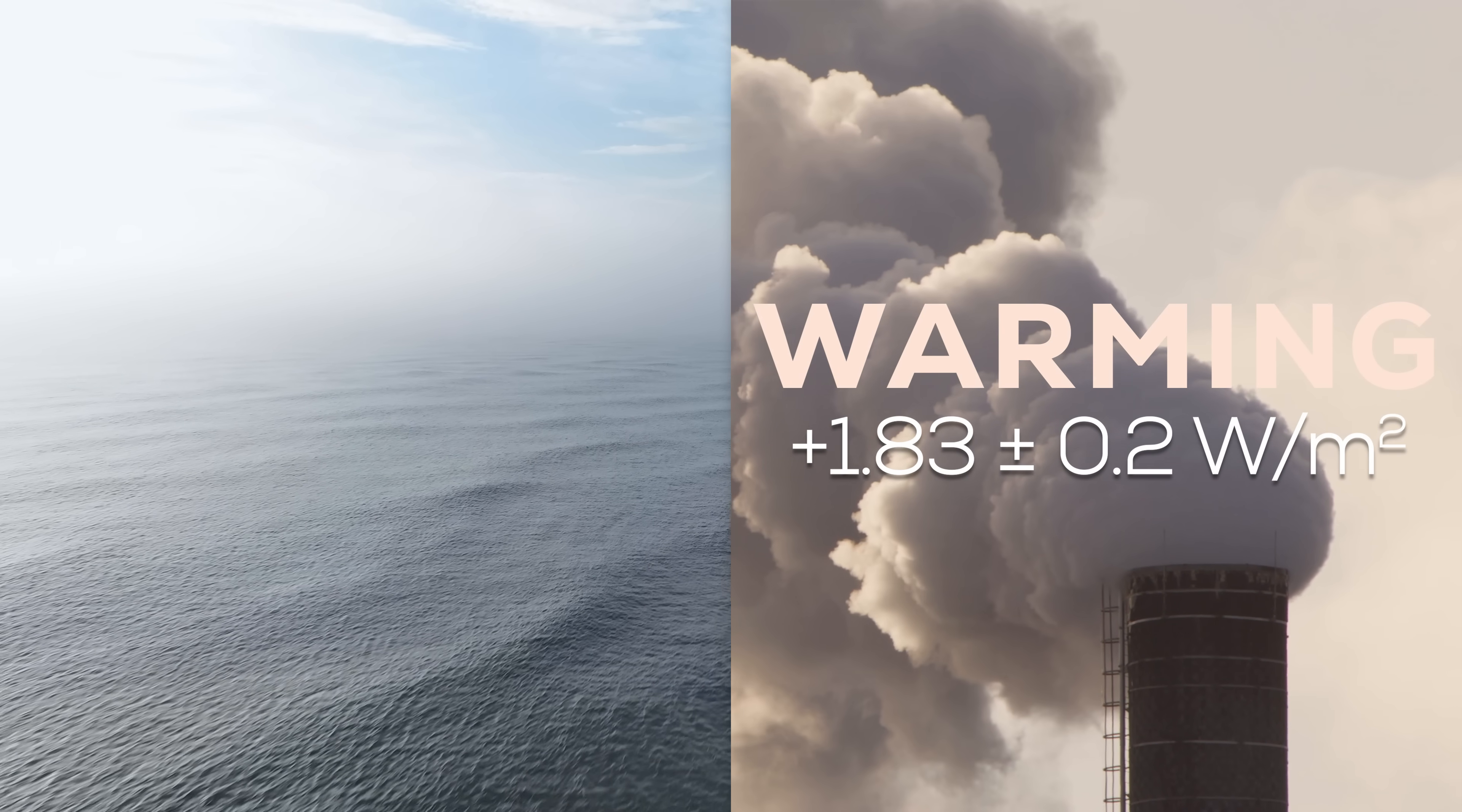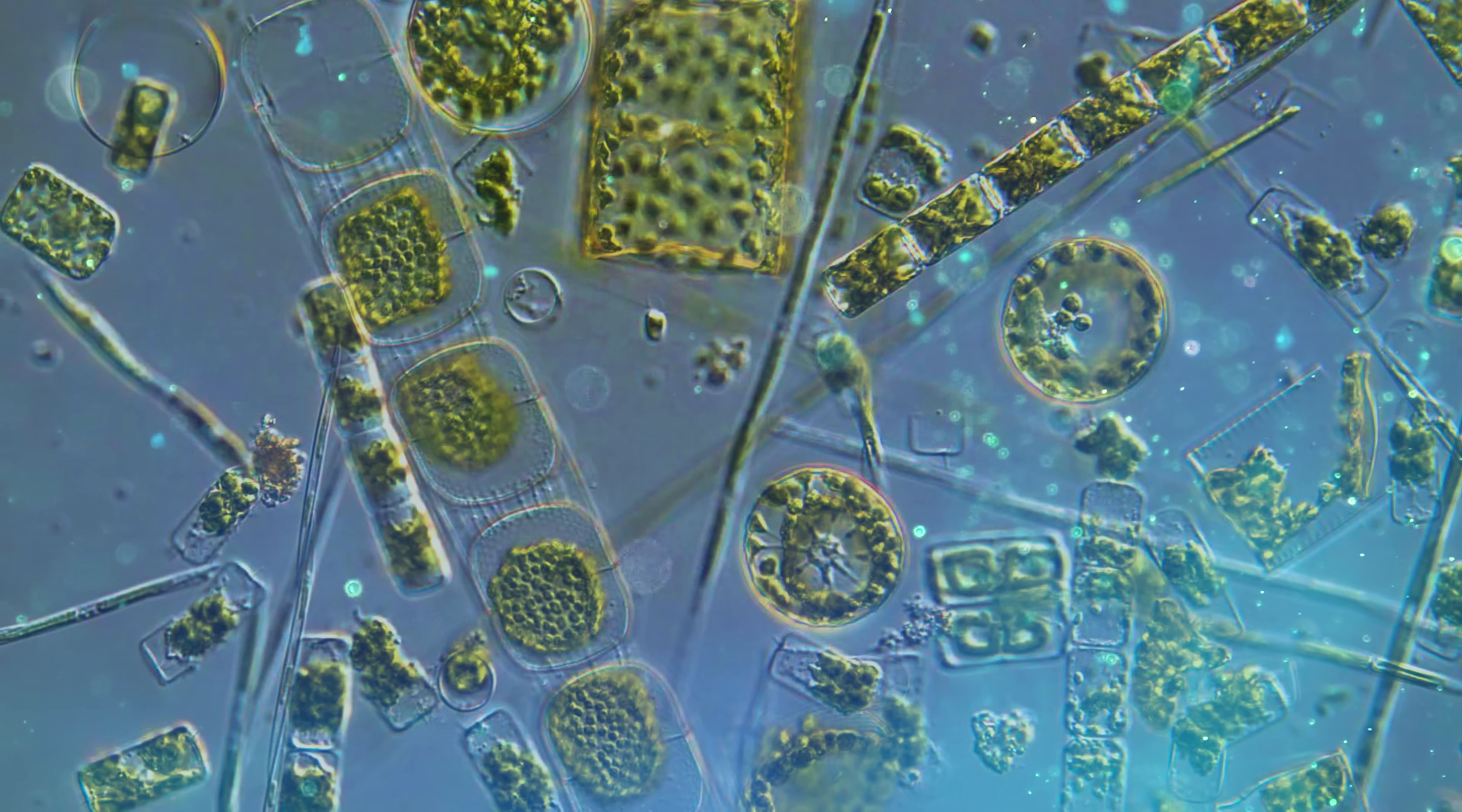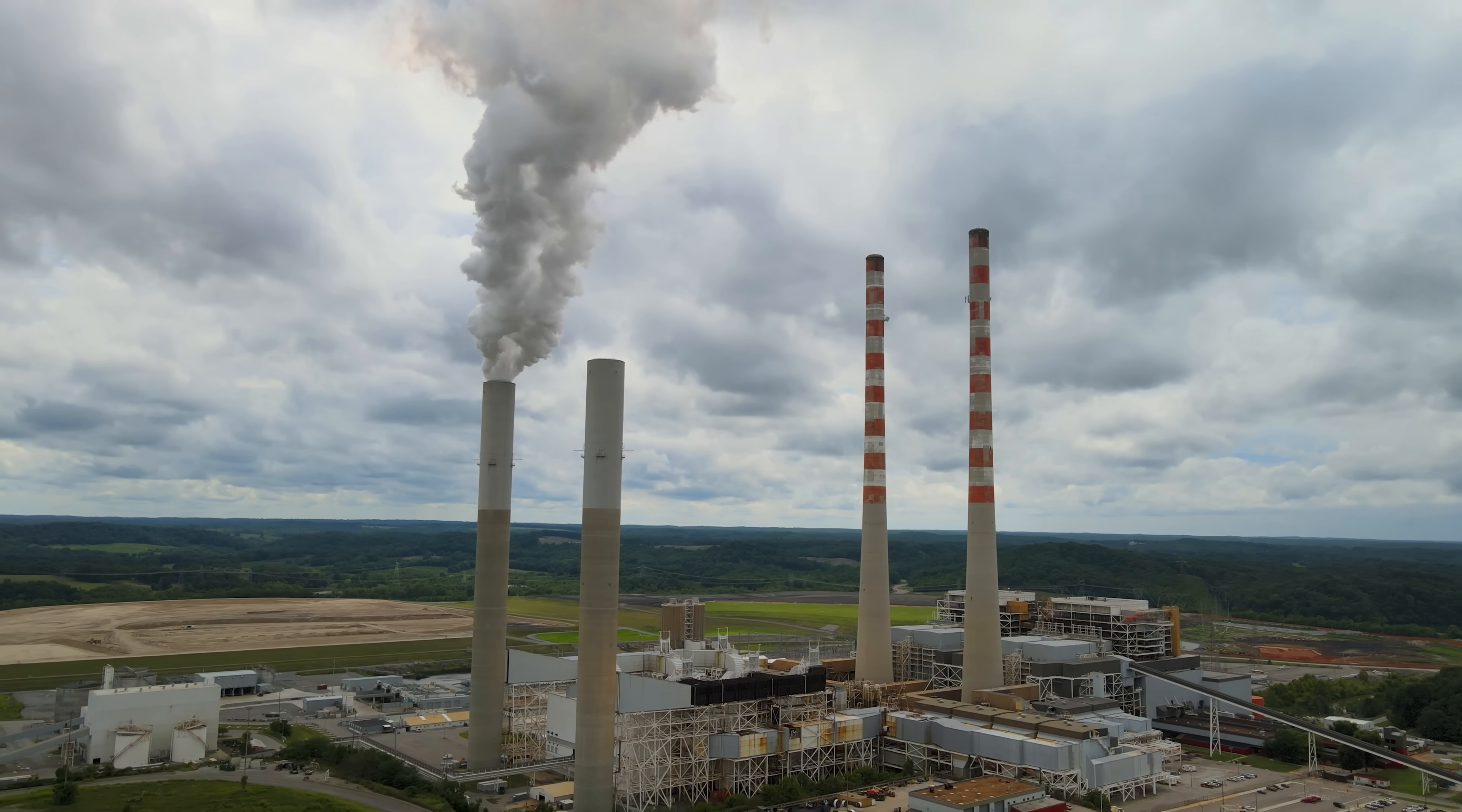Essentially, if this DMS disappeared tomorrow, we'd be about 3 degrees C above our pre-industrial temperatures. It's honestly pretty crazy that something as tiny as phytoplankton have the power to cool Earth as much as all our fossil fuels combined are warming it.